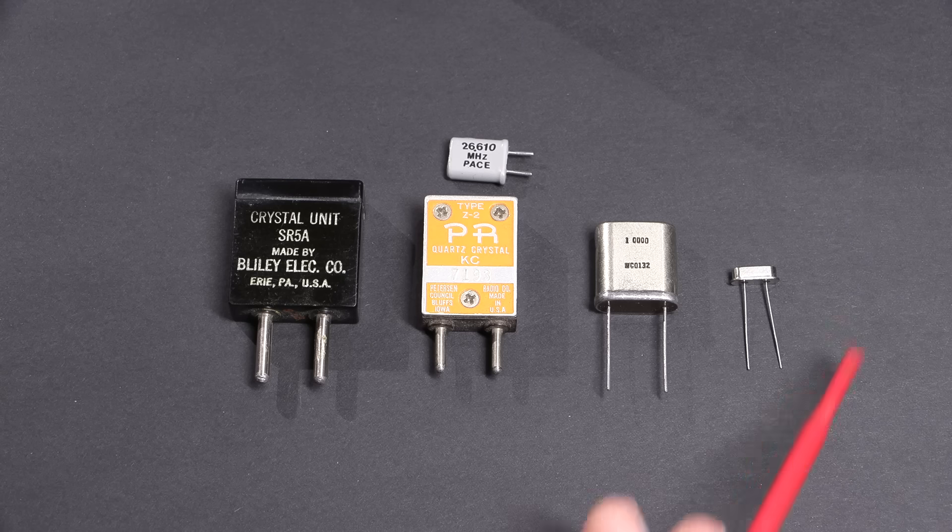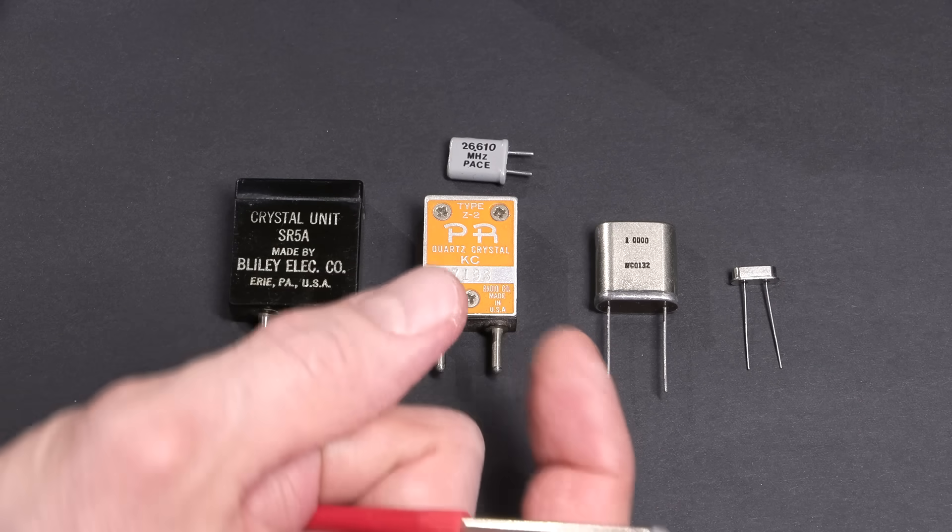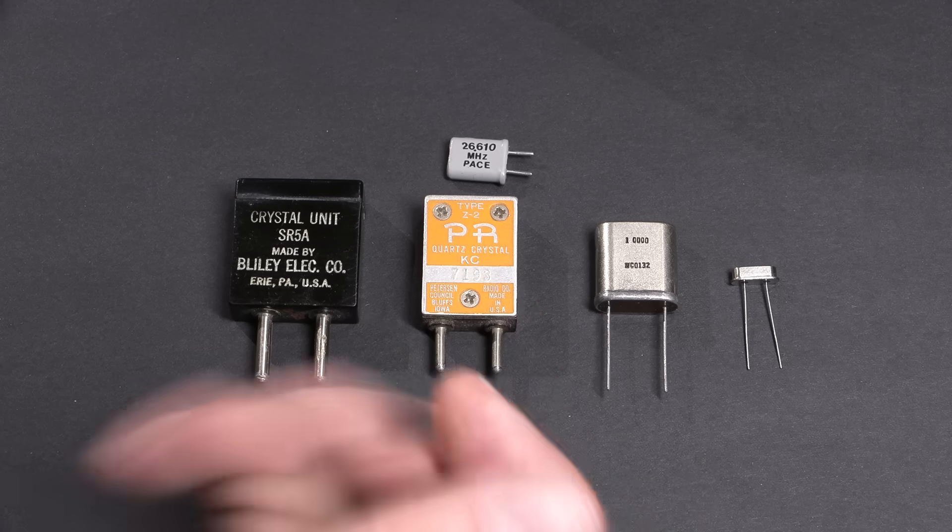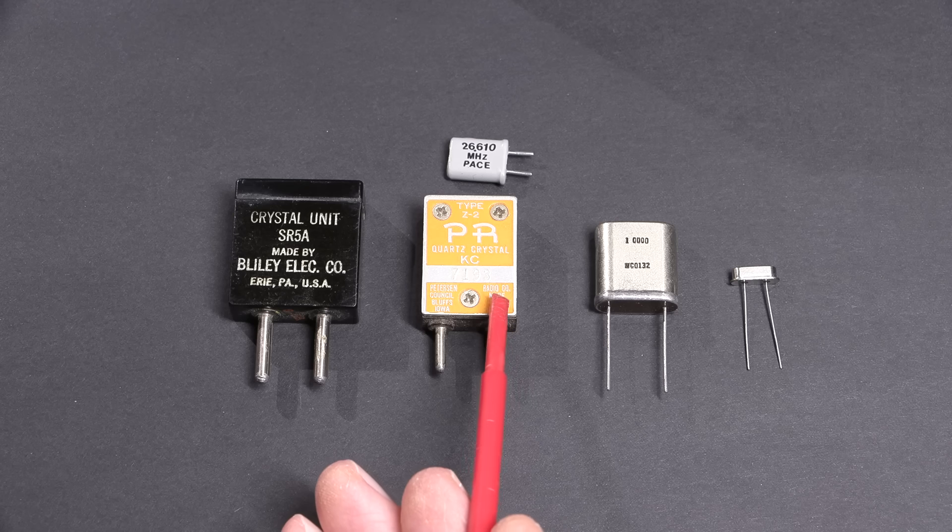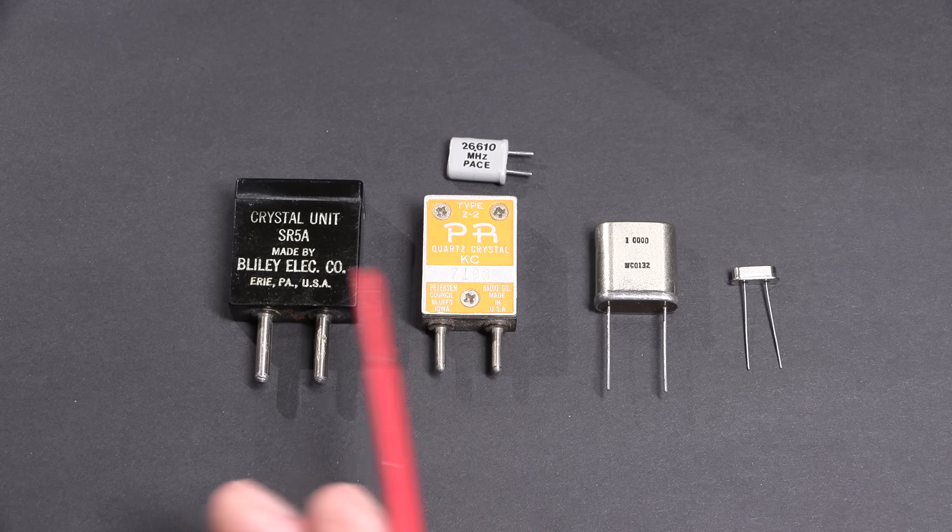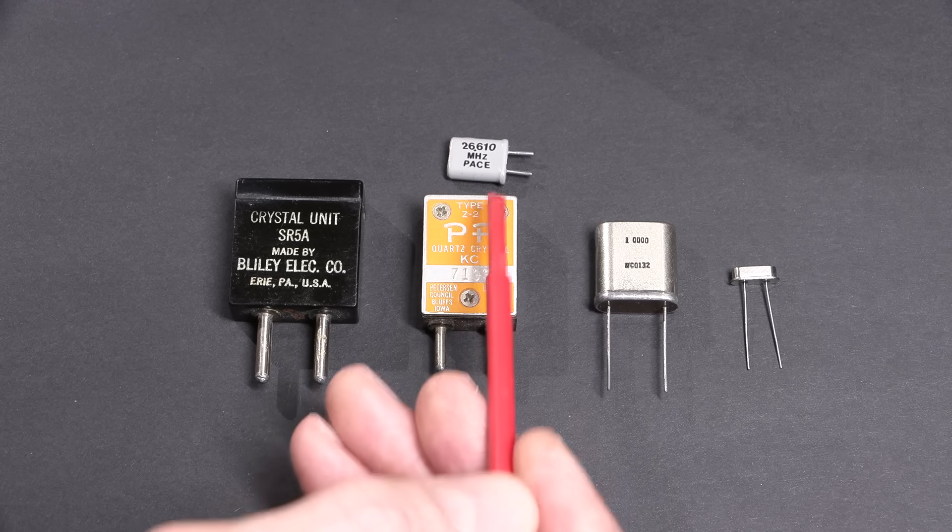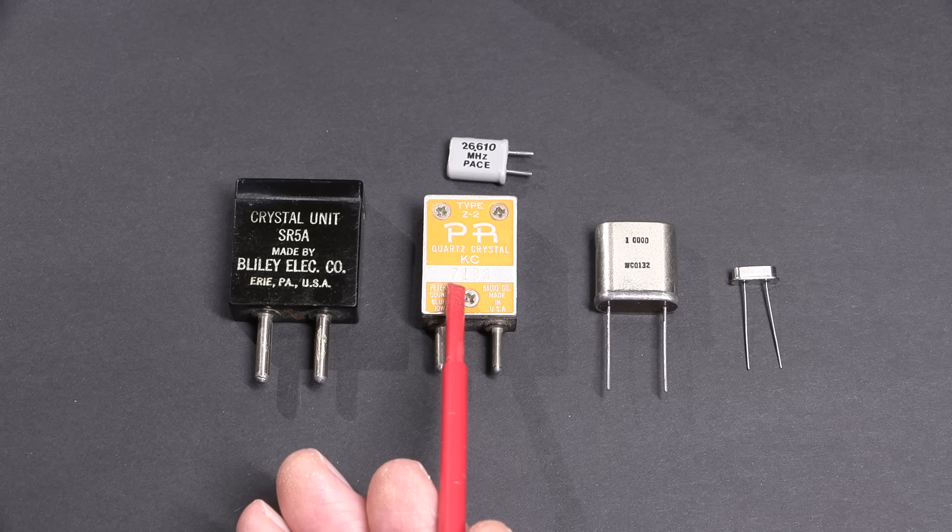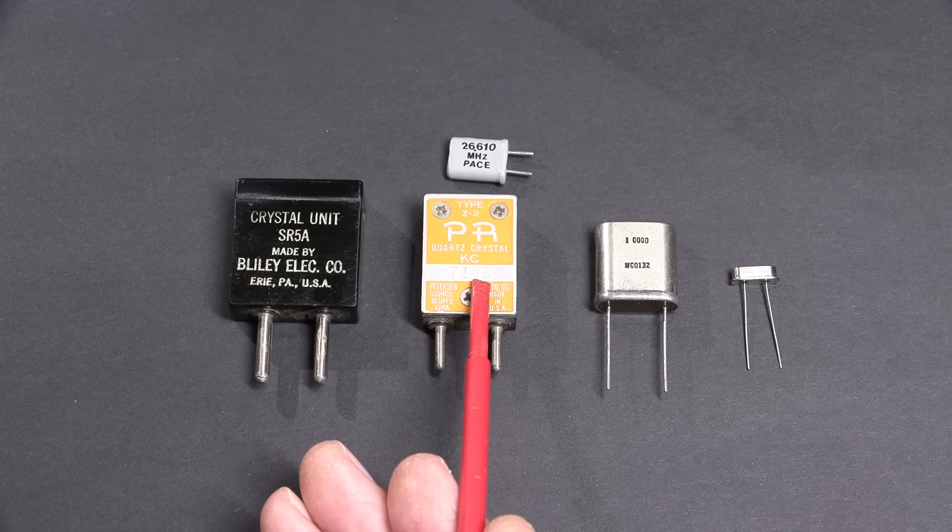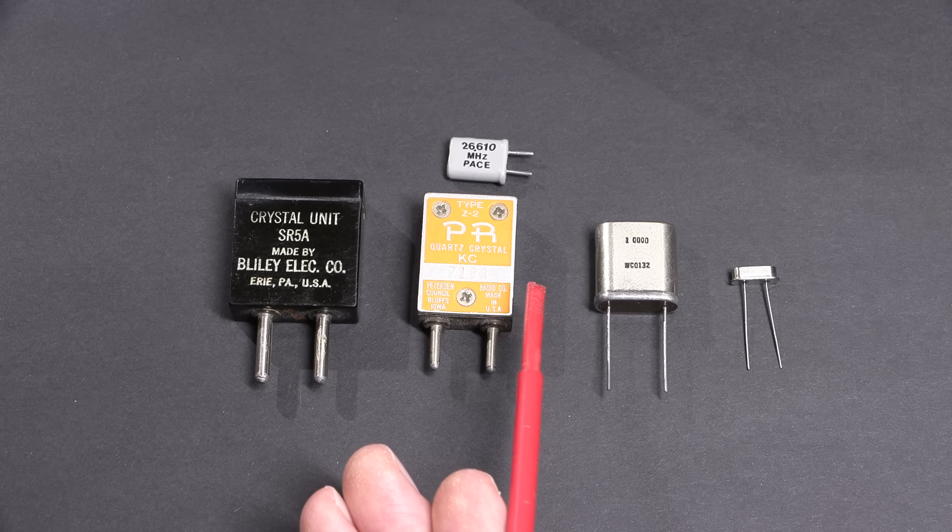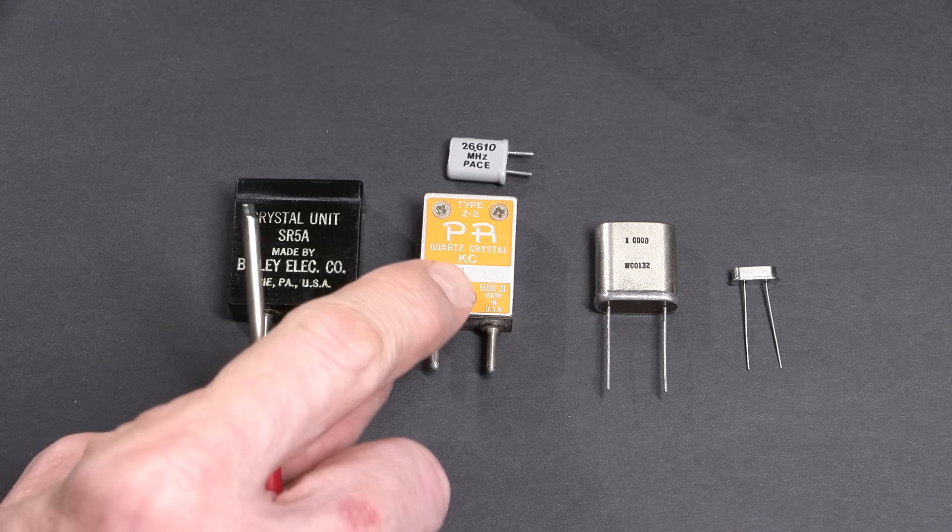These are all quartz crystals, basically a chunk of lab-grown quartz that's milled down until that crystal will operate or oscillate at a specific frequency. That specific frequency is called for by whoever is ordering up the crystal. Whoever ordered this Peterson crystal here, this FT243 package type crystal, wanted this to oscillate at 7.193 megahertz. So in order to make that happen...